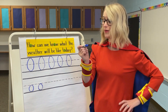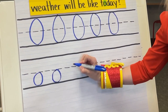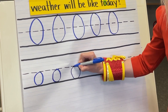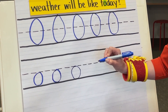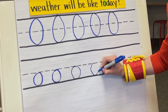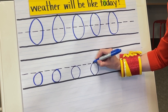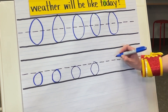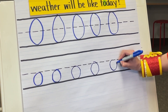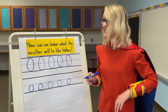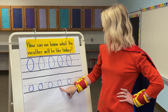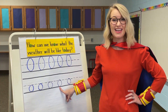Here we go — write it along with me. Start in the middle, go down, around, back up to the middle. Good. Let's do it again — start in the middle, go down, around, back up to the middle. One more time — start in the middle, go down, around, back up to the middle. Nice work. What letter did we just write? That's right, a lowercase O.